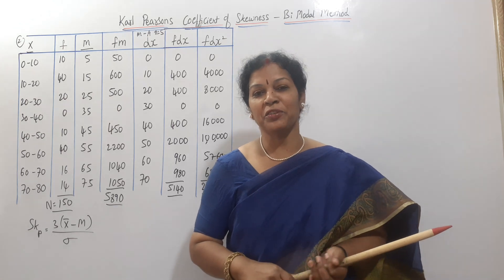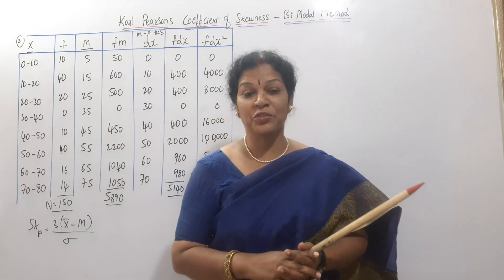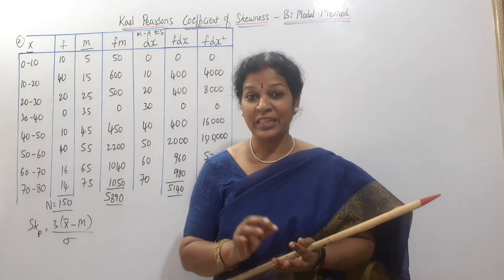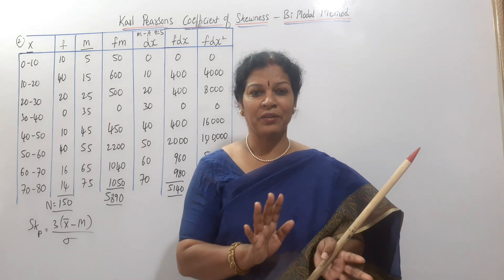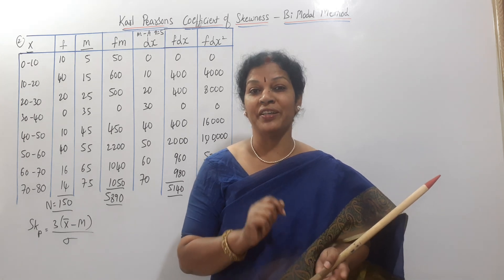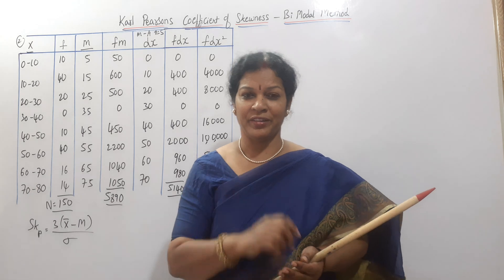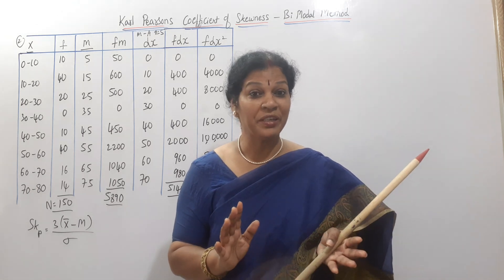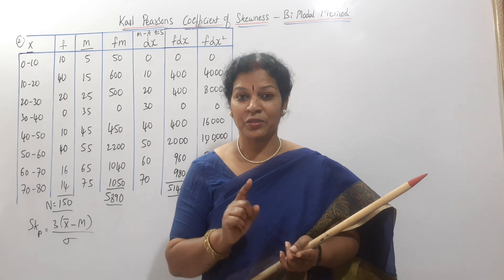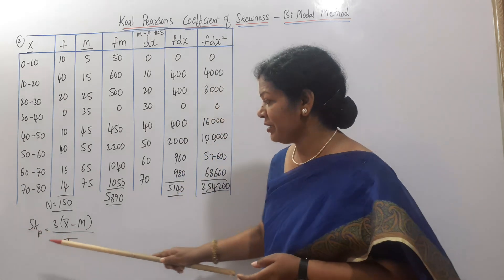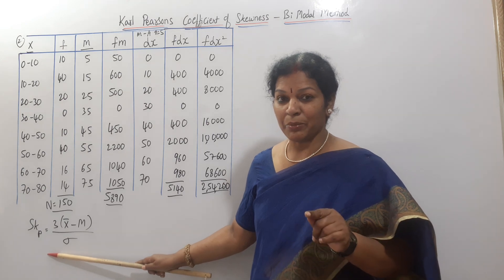Hello dear students, welcome to the Commerce and Management Academy. Today we'll see Karl Pearson's coefficient of skewness in the bimodal method. In the previous class we saw a simple problem where mode can be defined. If mode cannot be defined, there is a separate formula, as mentioned in the introductory class. That formula we have to use: SKP (Karl Pearson's) — this is the bimodal method.